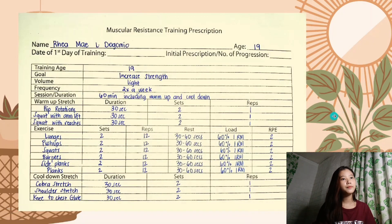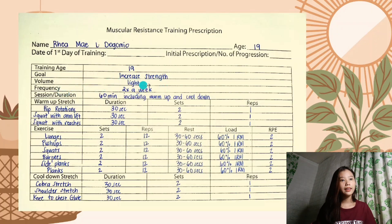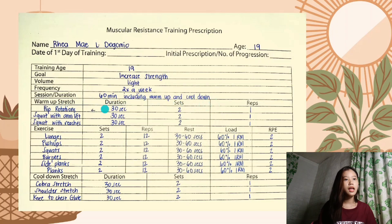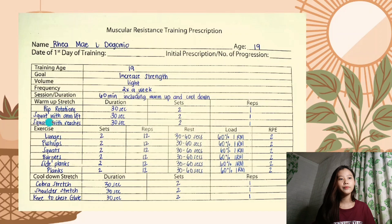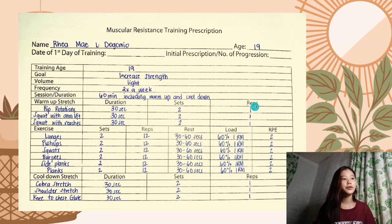Next is muscular resistance training prescription. My training age is 19, my goal is increased strength, volume is light, frequency is 2 times a week, and session duration is 60 minutes including warm-up and cool-down. The warm-up stretches are hip rotation, squat with arm lift, and squat with reaches — each with a duration of 30 seconds, 2 sets, and 1 repetition.